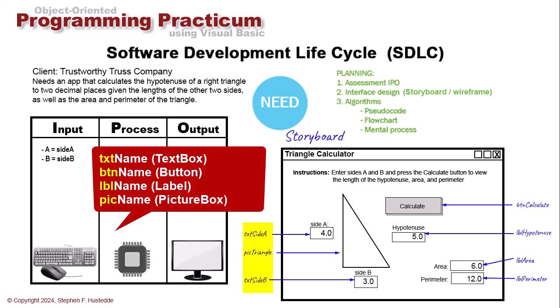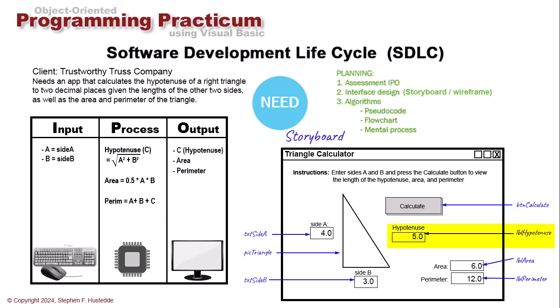We have a label called LBL Hypotenuse — LBL is Hungarian notation for label. We're going to use labels for our output. They kind of look like text boxes; in fact, sometimes these are indistinguishable. We can modify properties so a text box looks like a label and vice versa. But labels are not something the user can enter into — they are static text, so they're great for output. Then I have two more labels, LBL Area and LBL Perimeter, to display the area and perimeter values once we calculate those.